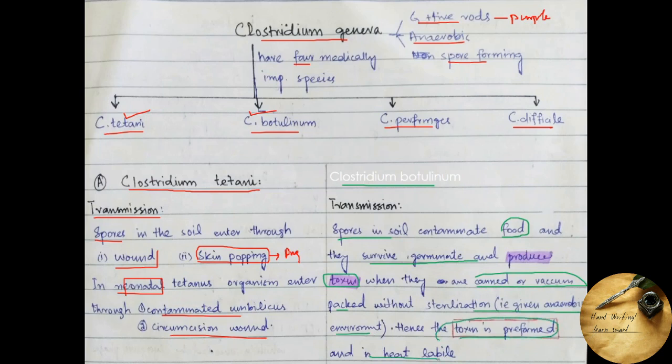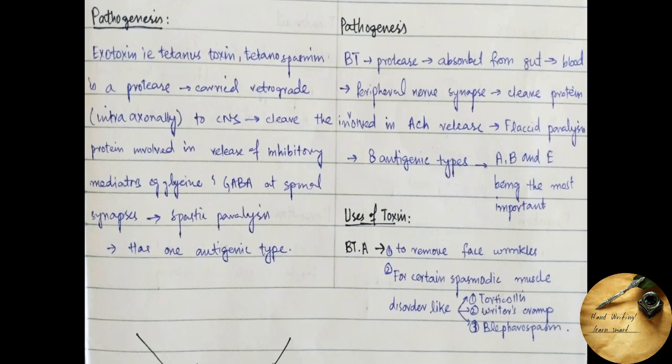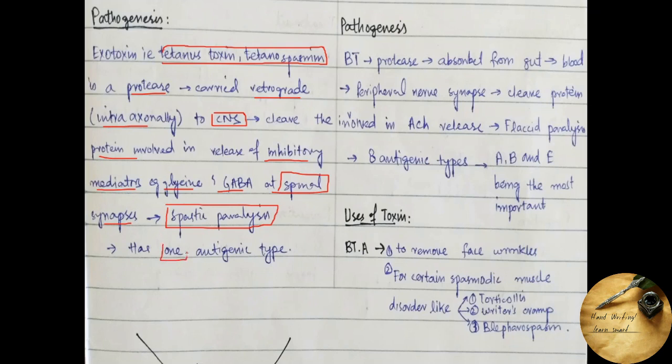Now coming towards the pathogenesis of diseases caused by Clostridium tetani, it produces an exotoxin called tetanus toxin, also called tetanospasmin. It is a protease which is carried retrogradely, i.e. intraaxonally, to the central nervous system where it cleaves the protein which is involved in the releasing of inhibitory mediators like glycine or GABA at spinal synapses and thus causes spastic paralysis. This tetanus toxin has only one antigenic type.